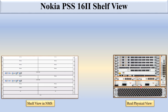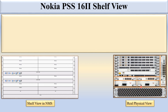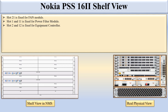The Nokia PSS 1611 has slot 21 which is fixed for the fan module. You can see here in the real physical view this is slot 21, fixed for the fan module. Slot 1 and slot 11 are fixed for the power filter module. You can see these two slots in the real physical view — slot 1 and slot 11 are fixed for the power filter module.